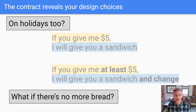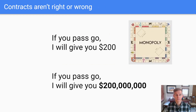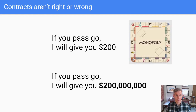Looking at the contract, you may decide you like it or decide you're going to choose a different design. Take, for example, the Monopoly game — it has a rule: pass go and collect $200. When you design software, you decide the rules. Contracts aren't right or wrong; they are just the rules that you chose.